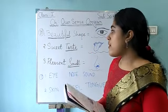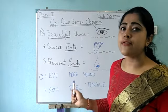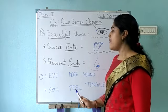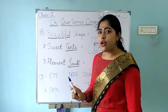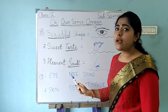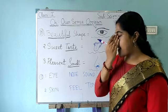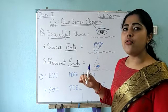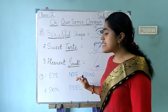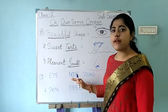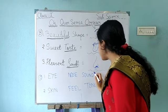Question number 1: eye, nose, and sound. Which one is not matching with the others? Eye — by our eye we can see, so eye is a sense organ. Nose — by our nose we can smell, so nose is also a sense organ. Sound — we can hear sound by our ear. Sound is not a sense organ. So eye and nose are sense organs, but sound is not. Sound is the odd one out and you have to circle it.